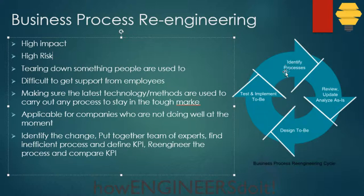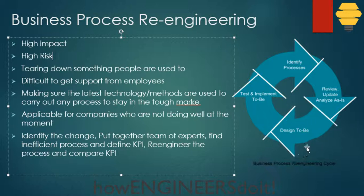That is why we say: identify the process that really needs to be re-engineered, then review and analyze the as-is state, and then design the to-be state. In this case, the design decision is that we need a bigger carrier and a heavy vehicle driver instead of the current drivers.